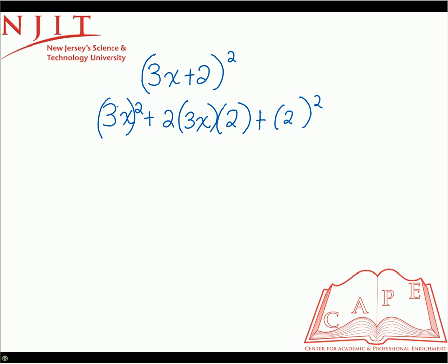So now let's get rid of parentheses and multiply. So 3x squared, if we square each piece, is 9x squared. Multiplying all the factors of the second term, 2 times 3x is 6x times 2 is 12x.